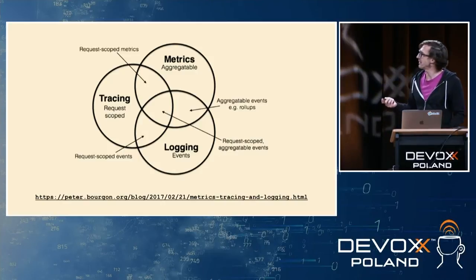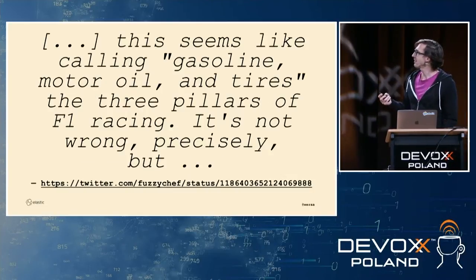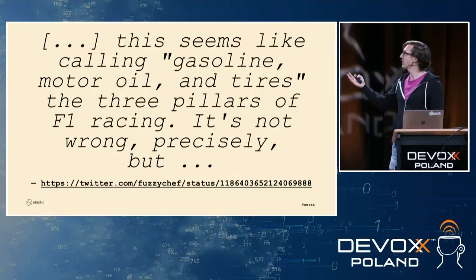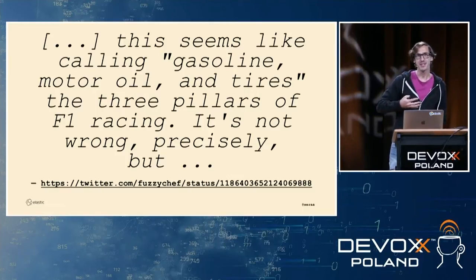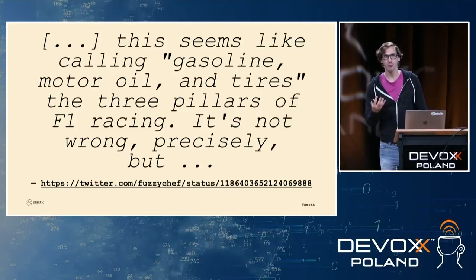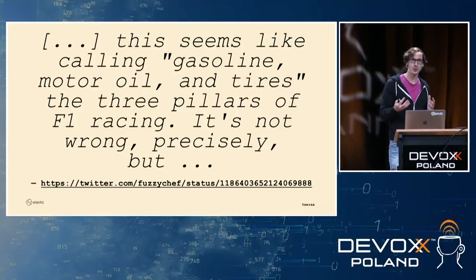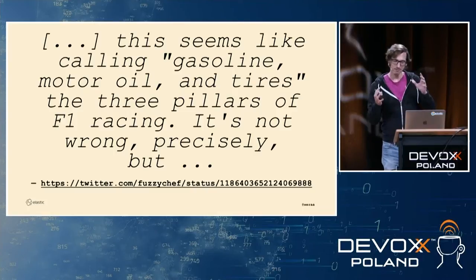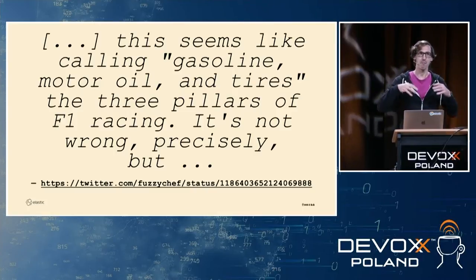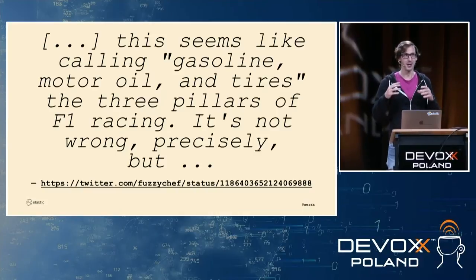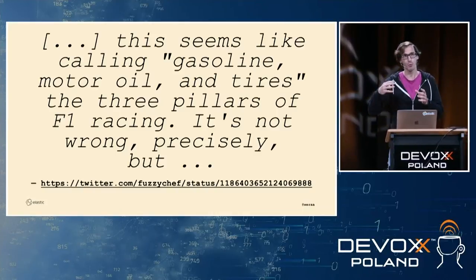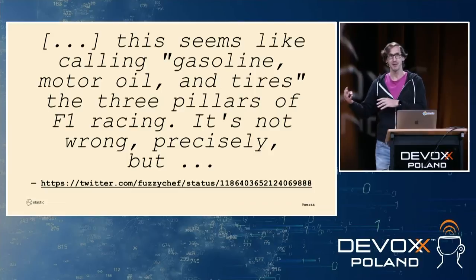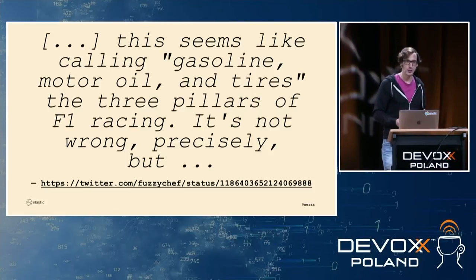Calling this observability is pretty much like saying Formula 1 is made out of gasoline, motor oil, and tires. Which is not wrong, but it's maybe not the essence of Formula 1 and why people watch it. So while logs, metrics, and traces are part of observability, Formula 1 is also made up of gasoline — but that's still not the essence of the thing.